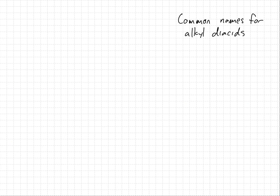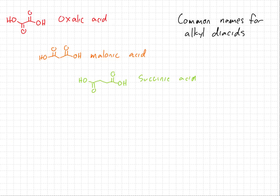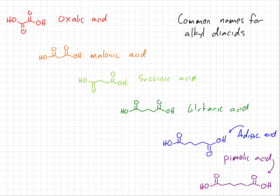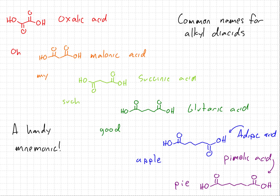Like simpler carboxylic acids, there are also important common names for dicarboxylic acids which we need to know: oxalic acid, malonic acid, succinic acid, glutaric acid, adipic acid, and pimelic acid. Each has one more CH₂ group separating the acids compared to the last. These names come up on standardized tests — the MCAT, DAT, and ACS exam — because they are all important in biological systems. A helpful mnemonic is 'Oh my, such good apple pie,' where the first letter of each word gives you the first letter of each acid name.